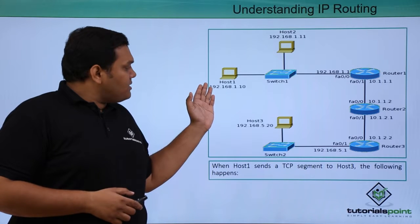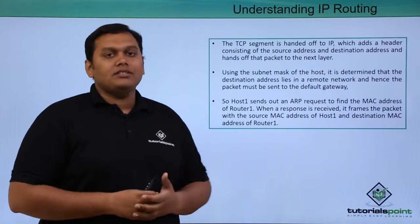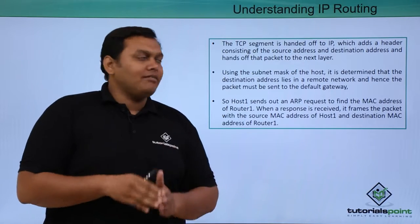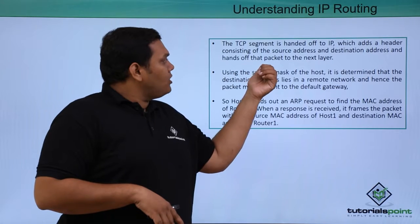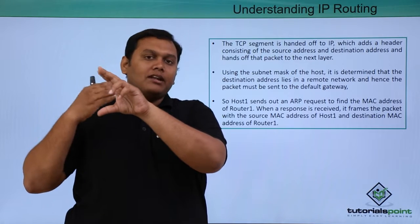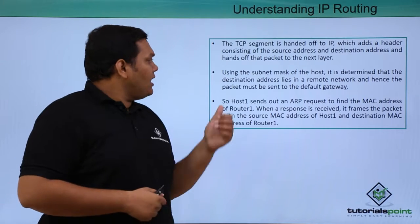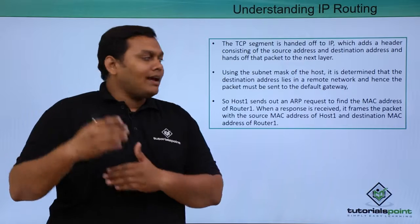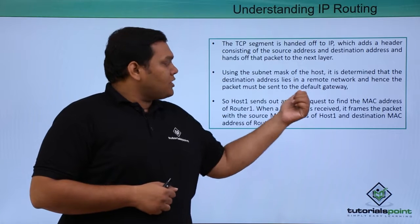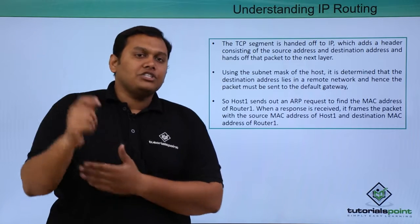When Host 1 sends TCP segments to Host 3, the following happens: the TCP segments are handed off to IP routing, which adds a header with the source IP address and destination IP address, and hands that packet to the next layer. The packet is forwarded using the subnet mask of the host, which determines that the destination address lies in a remote network, so the packet must be sent to the default gateway to pass through to the destination address.